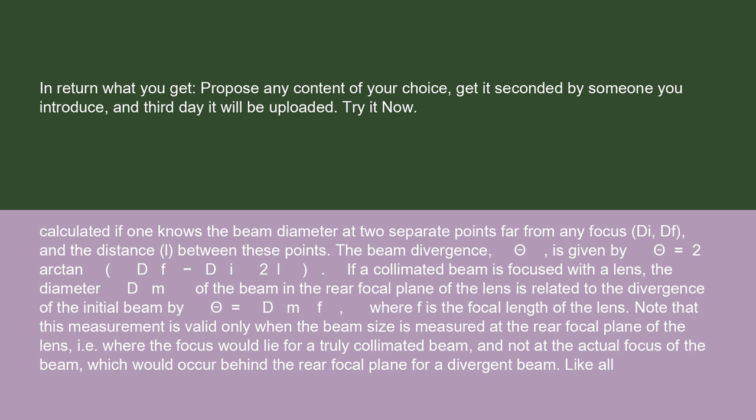If a collimated beam is focused with a lens, the diameter D_m of the beam in the rear focal plane of the lens is related to the divergence of the initial beam by theta = D_m / F, where F is the focal length of the lens. Note that this measurement is valid only when the beam size is measured at the rear focal plane of the lens — i.e., where the focus would lie for a truly collimated beam — and not at the actual focus of the beam.